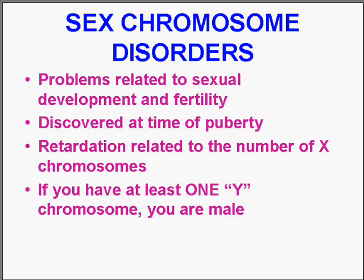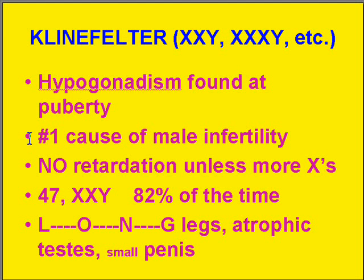The general rule is: if you have at least one Y chromosome, you are male. Klinefelter's patients are male because they have at least one Y, but they also have at least two X's — sometimes three. Most of the time it's two, about 82% of the time. The more X's there are, the more likely they are to be retarded. It's the number one cause of male infertility.